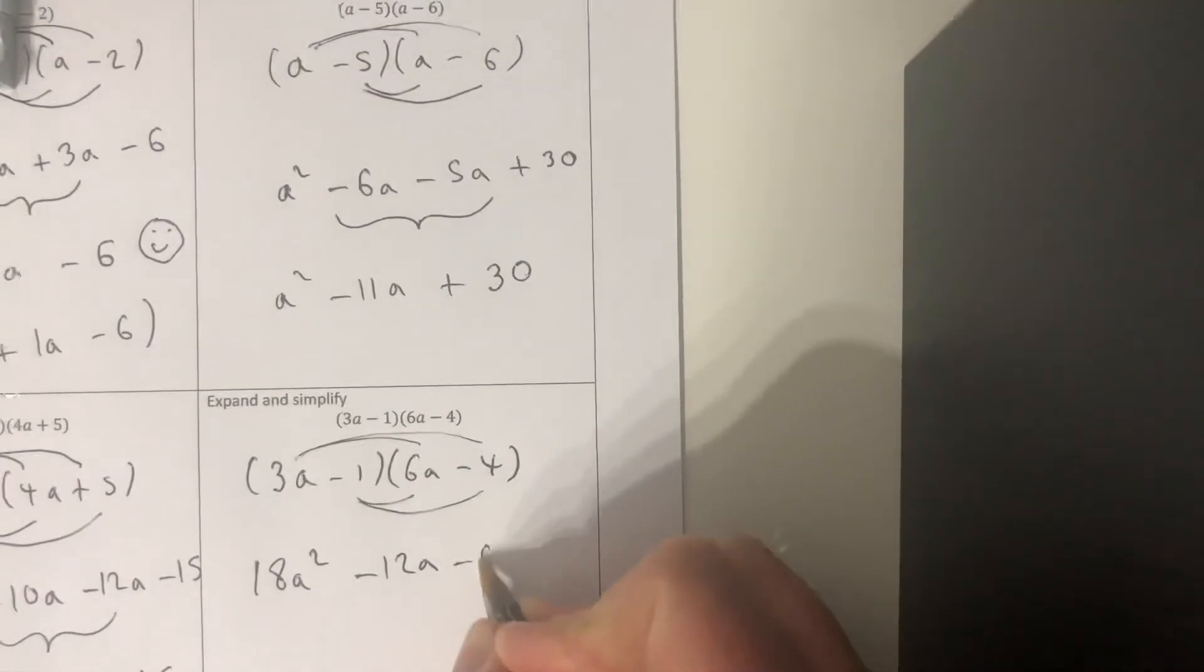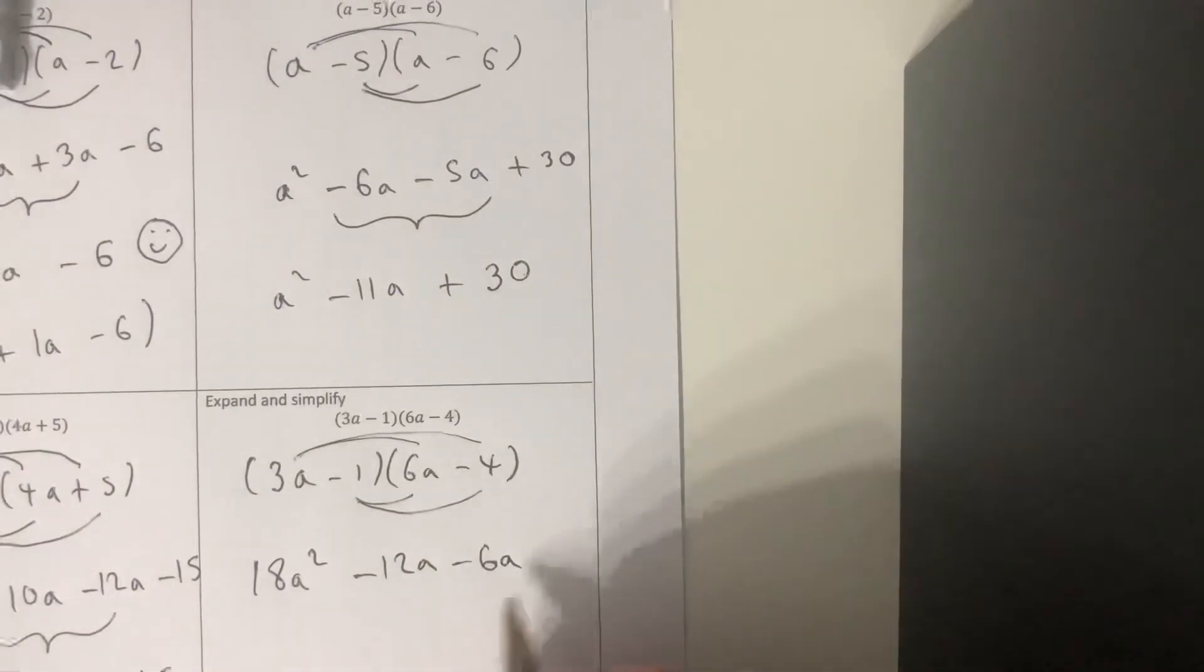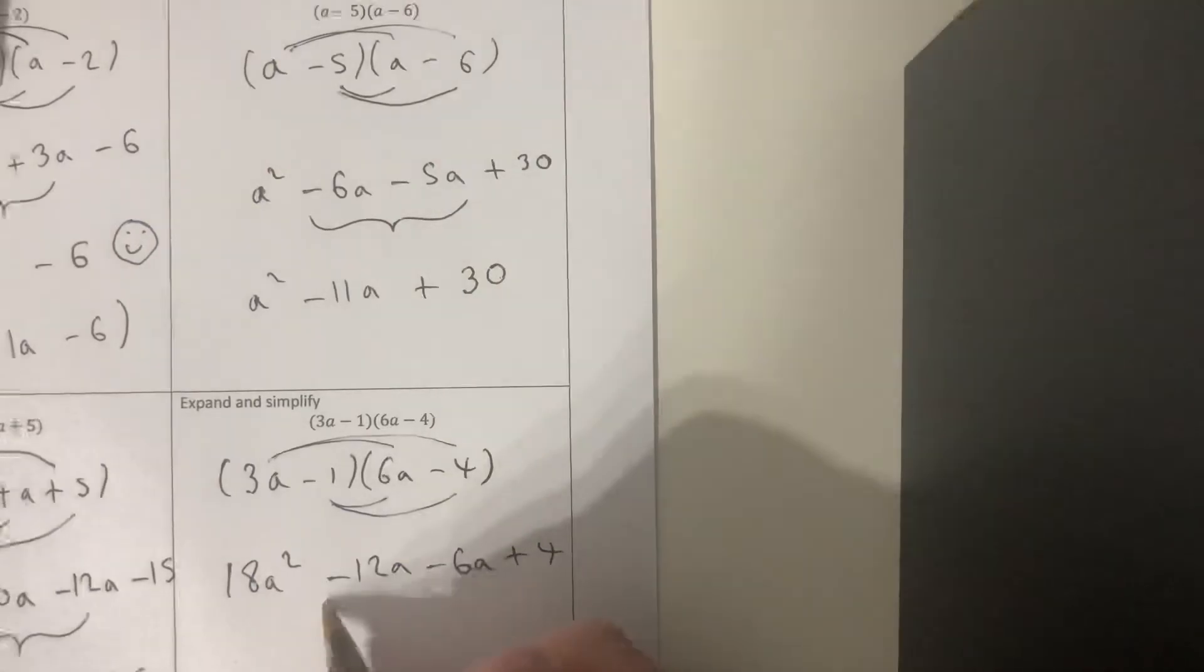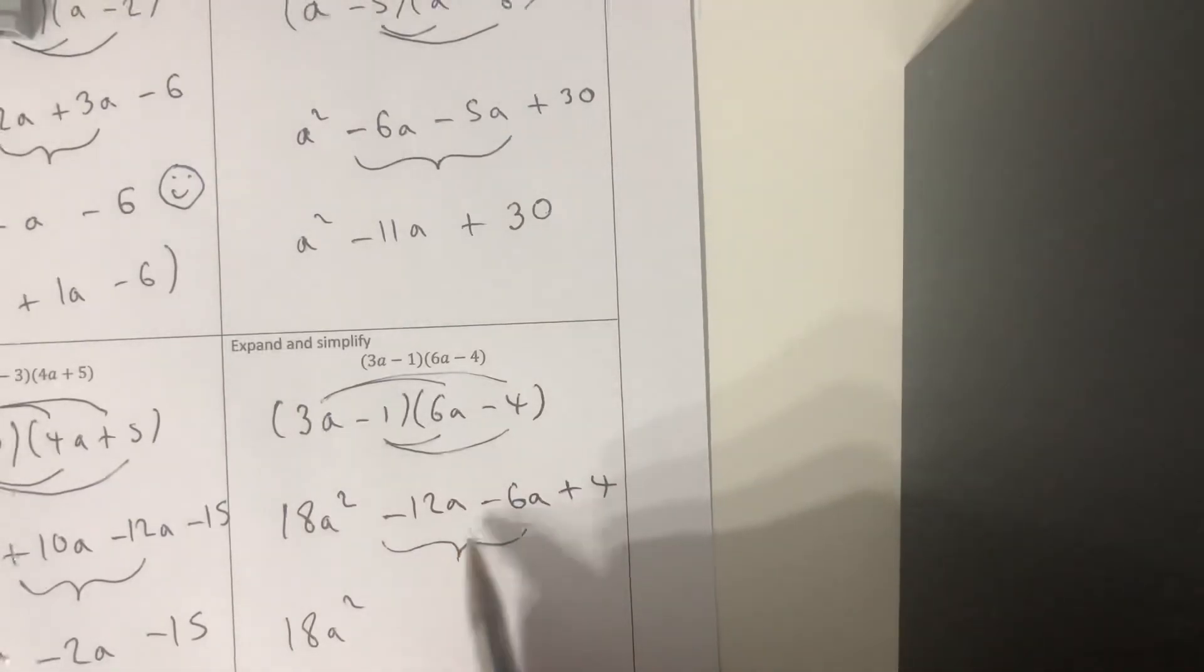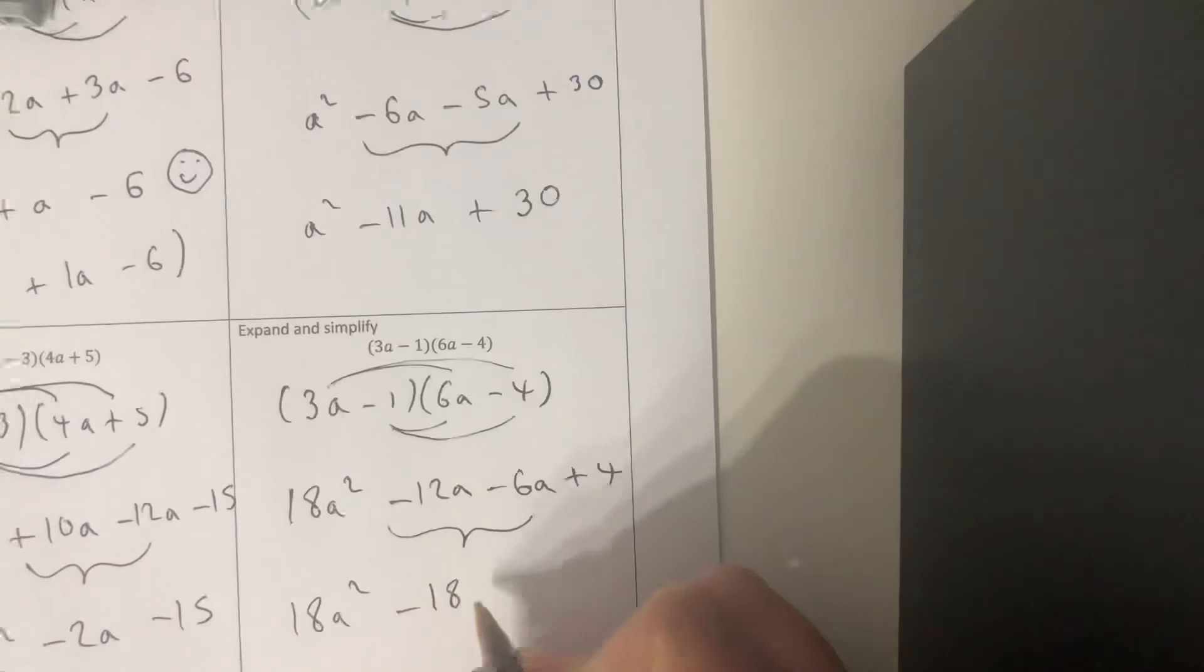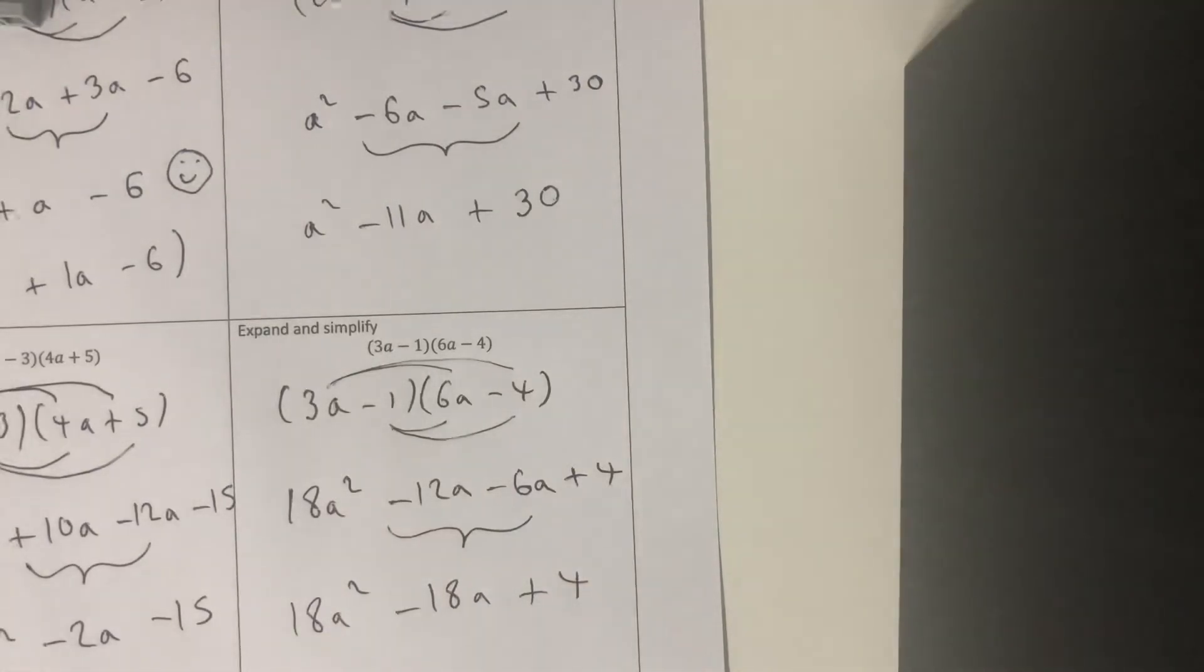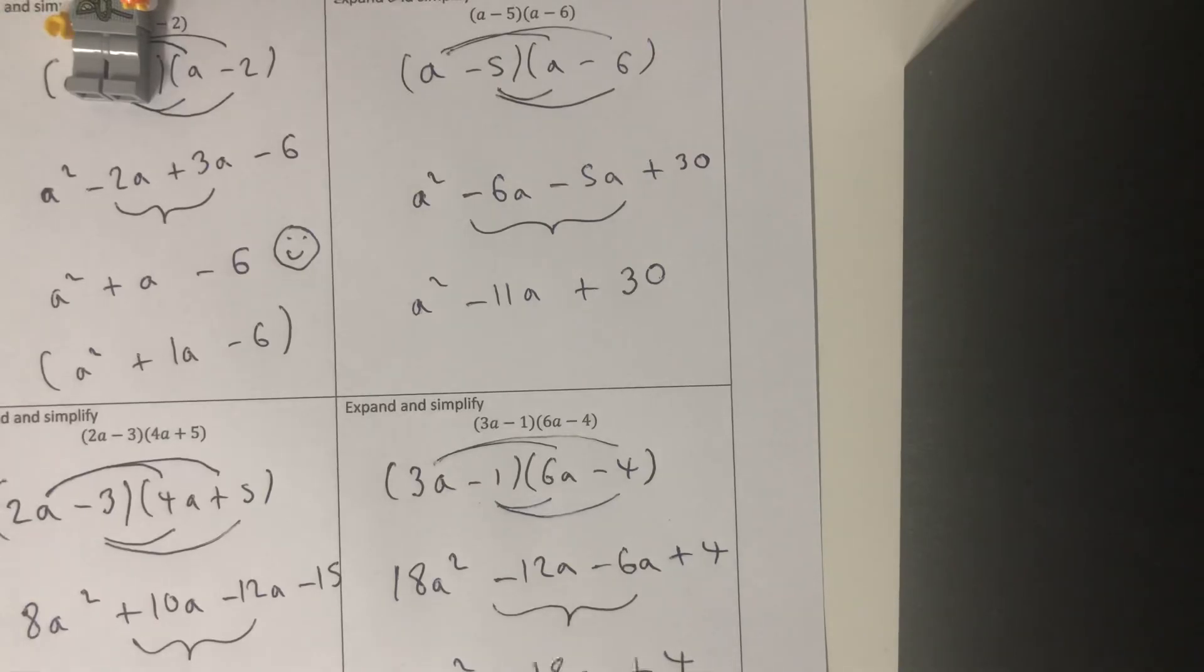And of course be careful, minus 1 times minus 4 is plus 4. If we simplify the two bits in the middle, keep the same on the left, what is minus 12a minus 6a? Goes down again, so minus 18a. And then you've got the plus 4 at the end, and that will be your simplified version of it. Okay, your turn. Questions are very similar. Have a go at those, but as I said make sure you've gone through the expanding four ones first. Good luck and I will speak to you later on this week. Take care of yourselves, goodbye.